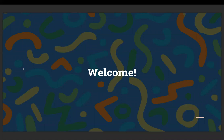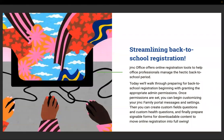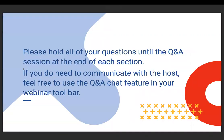Perfect. We've got a wealth of knowledge here. JMC office offers online registration tools to help office professionals manage the hectic back to school period. Today we're going to walk through preparing for back to school registration, beginning with granting the appropriate admin permissions. Once permissions are set, you can begin customizing your JMC family portal message and settings. Then you can create custom field questions and custom health questions. And finally, prepare signable forms for downloadable content to move online registration into full swing. If you have any questions, go ahead and type them in the question and answer session, and we will get to them at the end of each section.